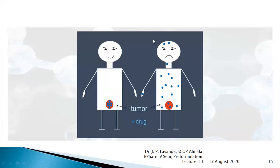Consider two patients: one is distressed while the other is happy. The happy patient benefits because the drug accumulates at the targeted organ. The distressed patient suffers because the drug is spreading all over the body, causing discomfort, side effects, and an unfavorable outcome.